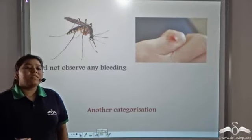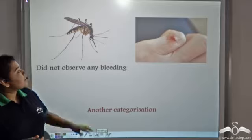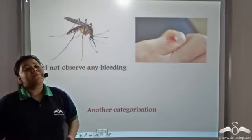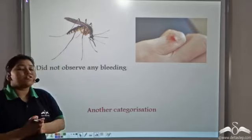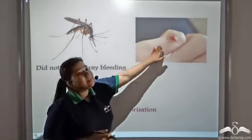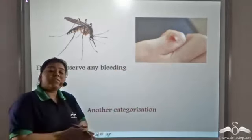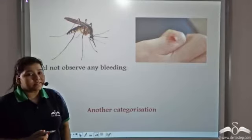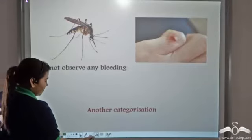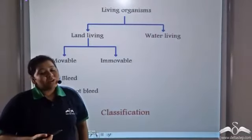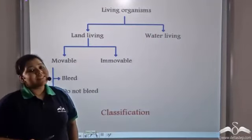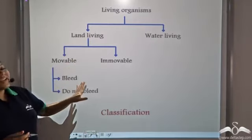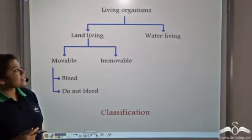He noticed further that some organisms like the mosquito do not bleed when they get a cut, whereas human beings bleed when they get a cut. So he put these organisms into two separate categories. According to all the observations that Aristotle made, he put the organisms into different categories.